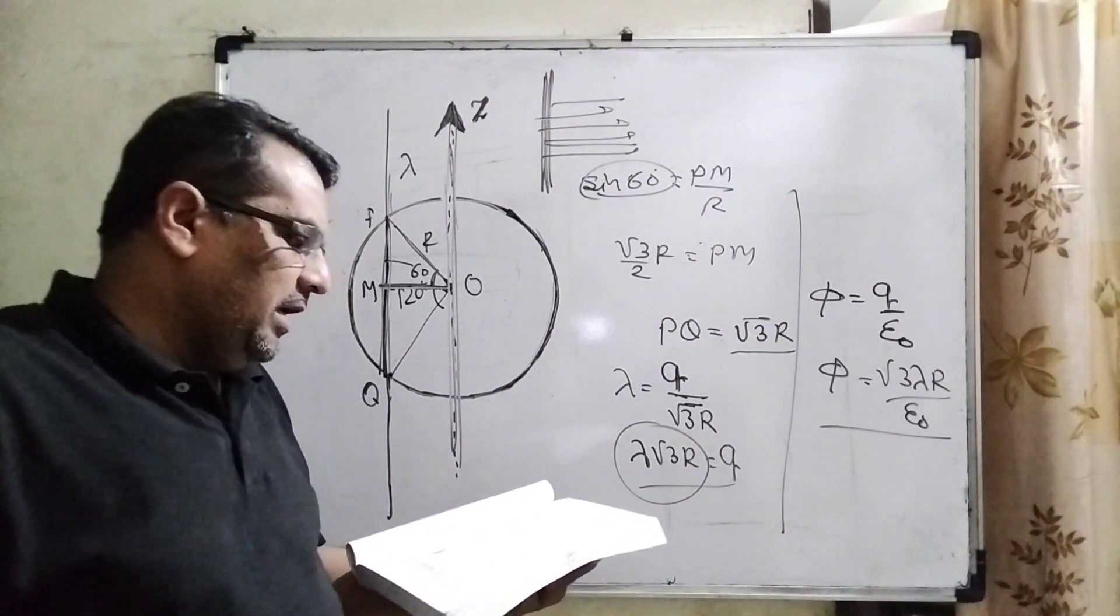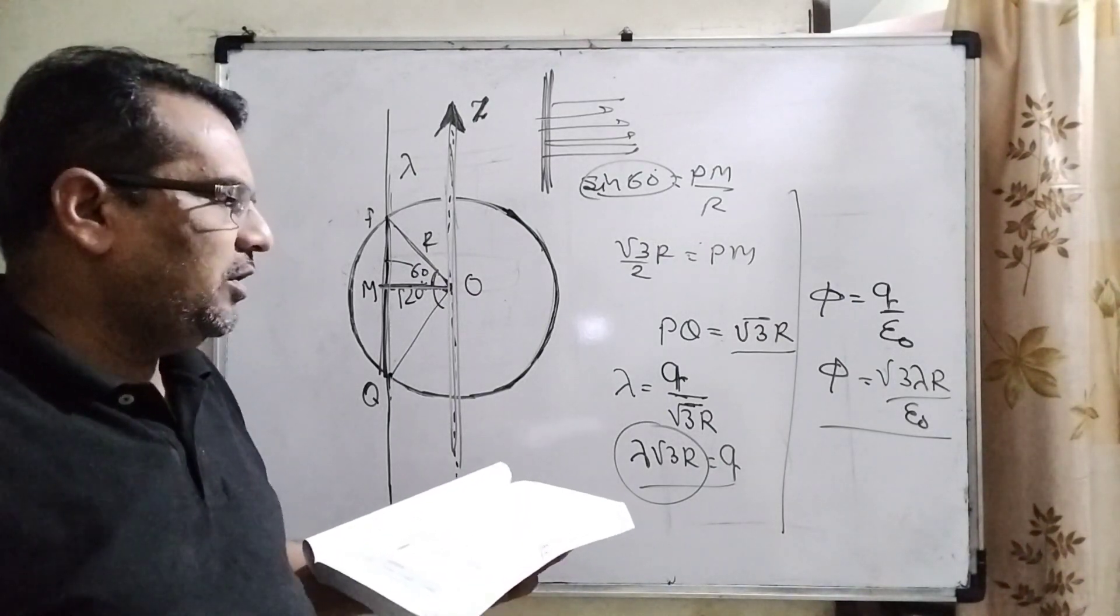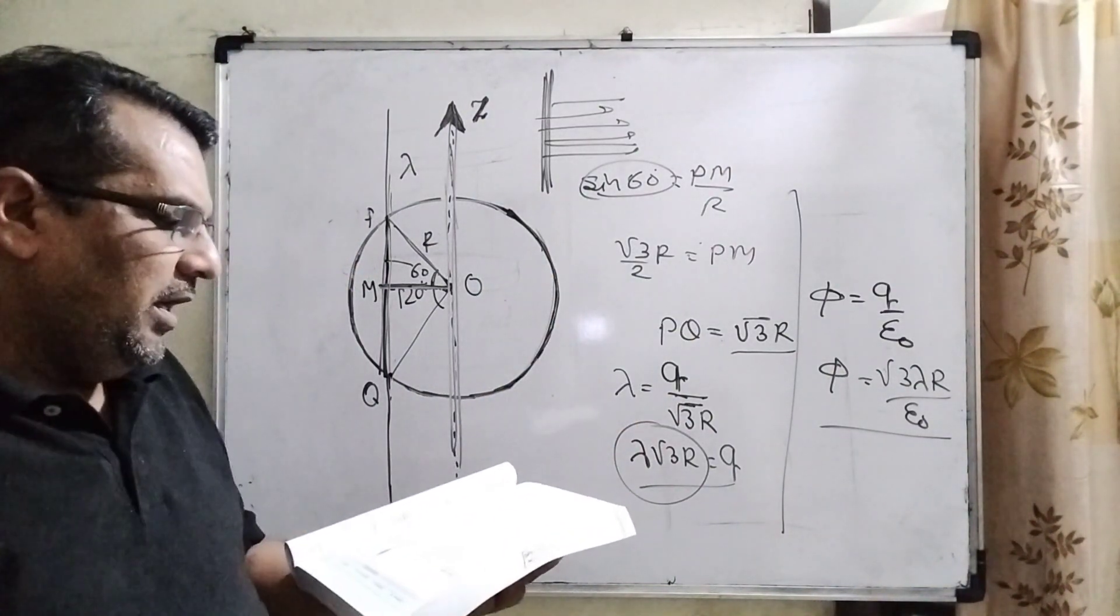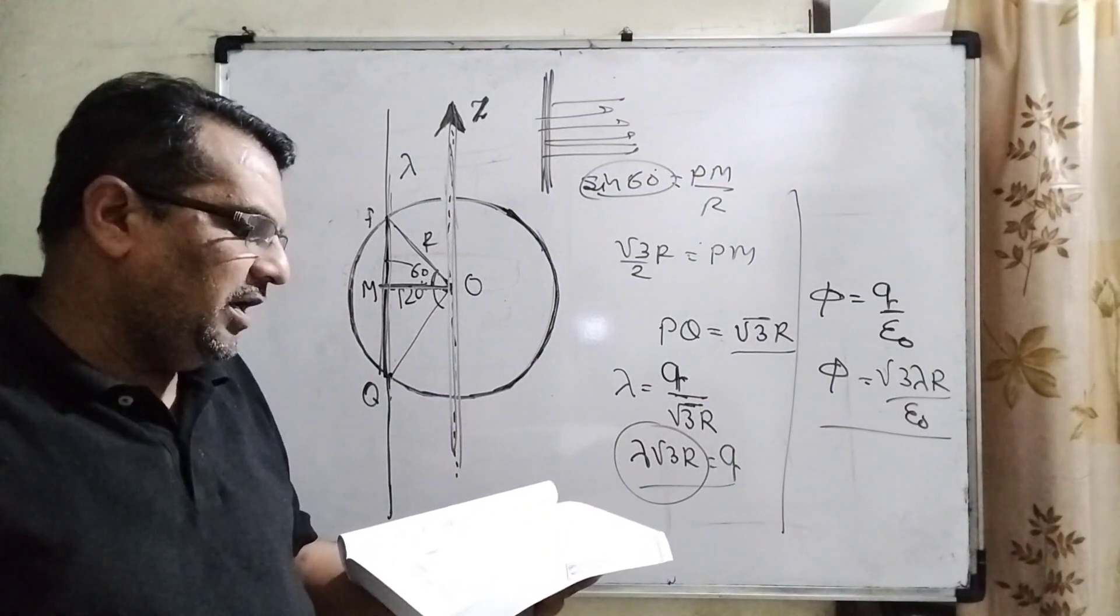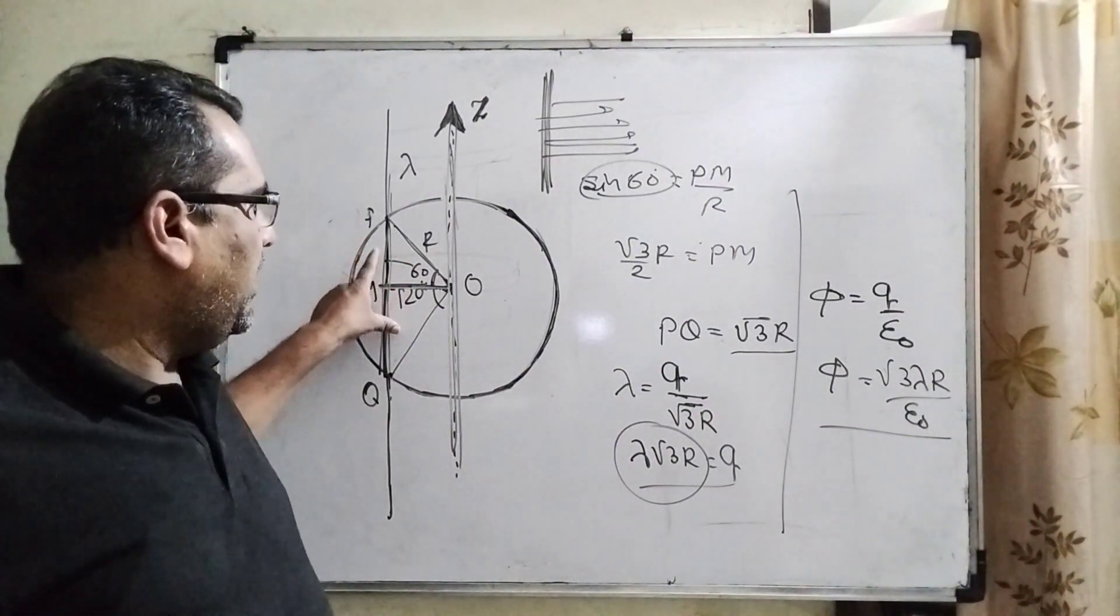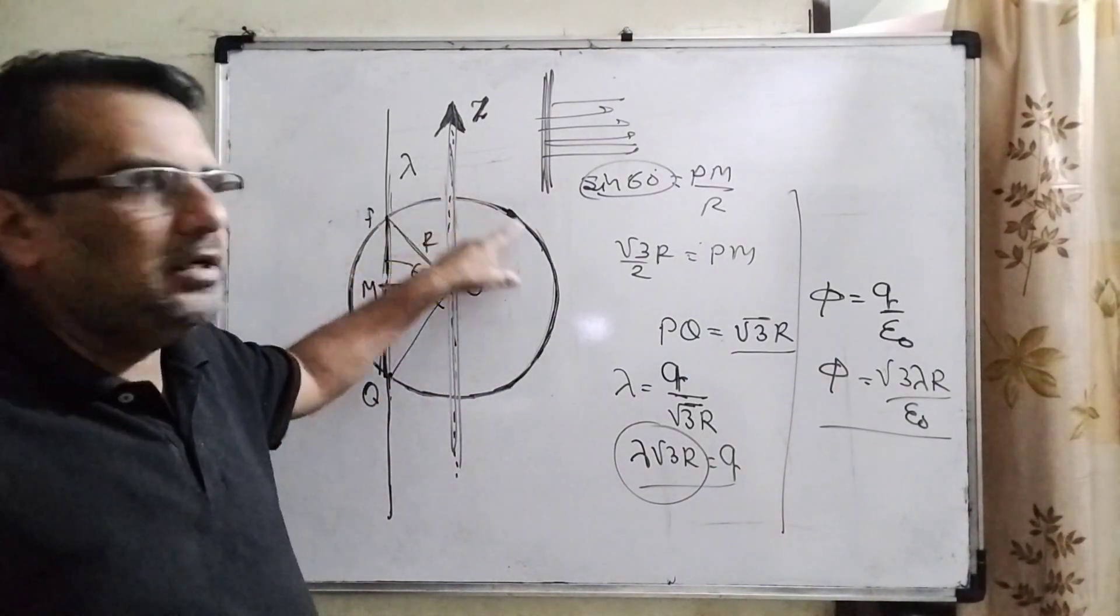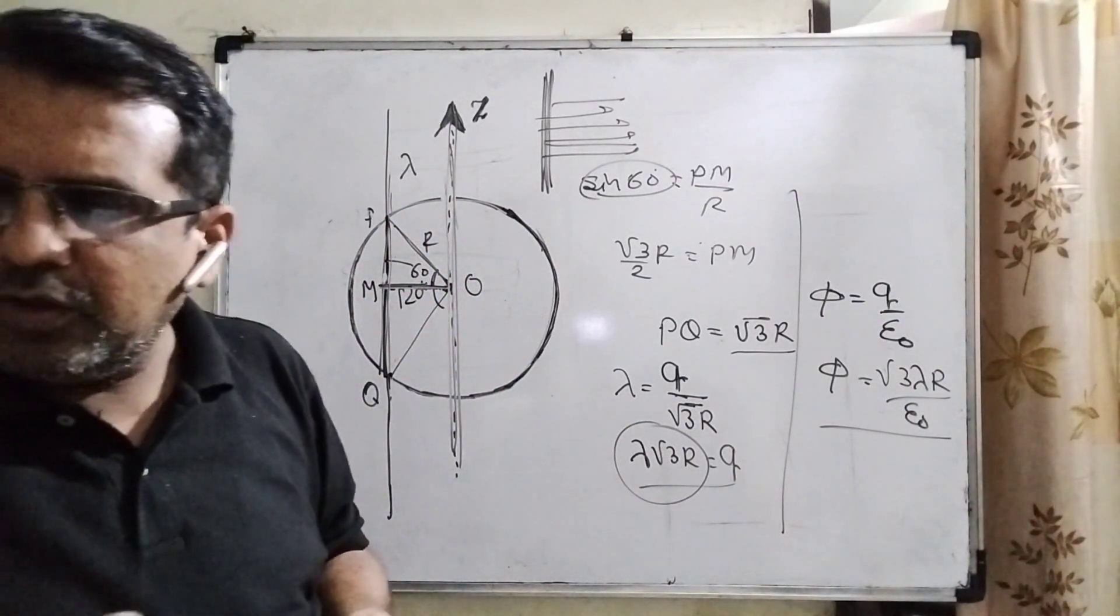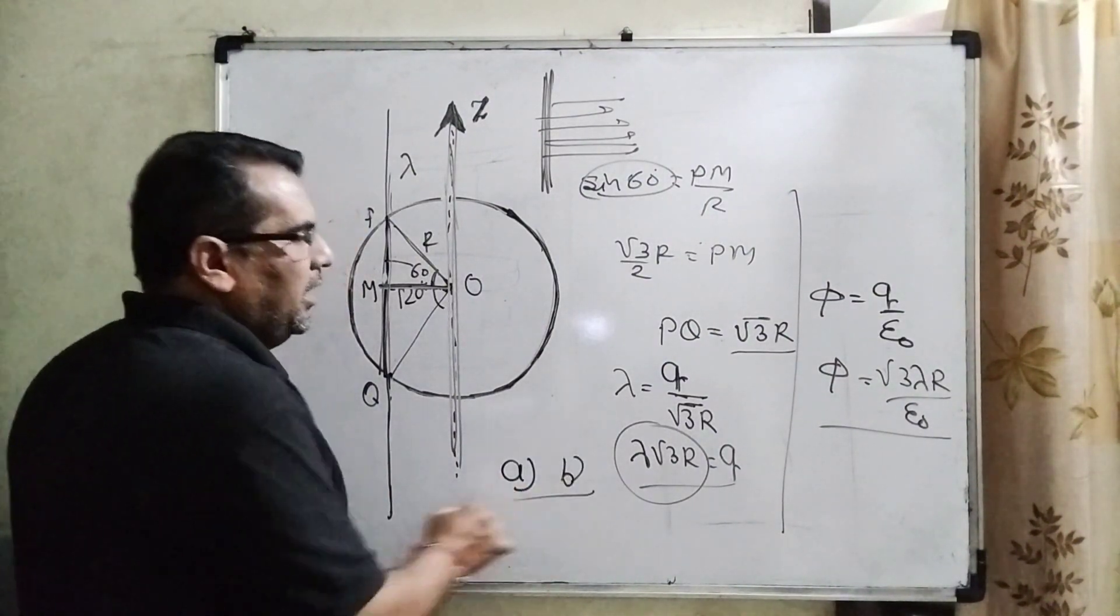Now third option: the electric flux through the shell is root 2 R lambda over epsilon zero. That is not possible because we have already found it out. And last option: the electric field is normal to the surface of the shell at all points. It is also wrong. Why? Because we have to talk about here only the wire, not the shell, because it is non-conducting. So therefore the last option is also wrong. So the correct answer is only A and B. I hope you understand this question clearly.